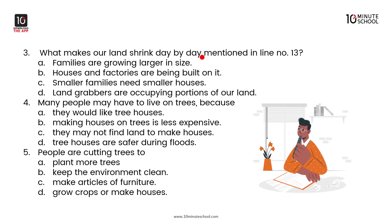What makes our land shrink day by day, mentioned in line number 13? The options include: families are growing larger in size; houses and factories are being built on it; smaller families need smaller houses; land grabbers are occupying portions of our land. The answer is that houses and factories are being built on it.